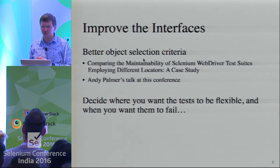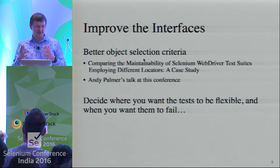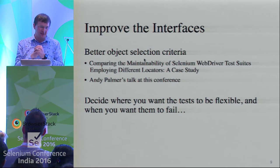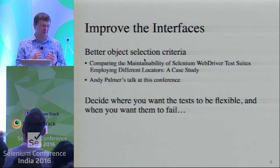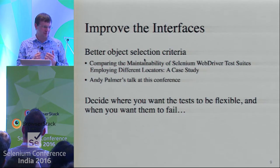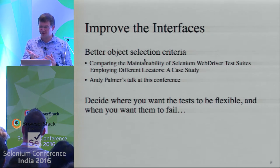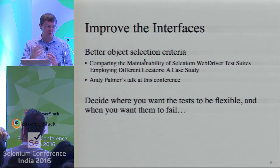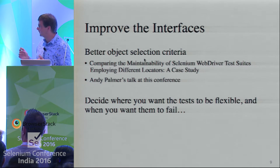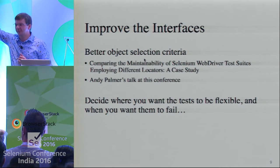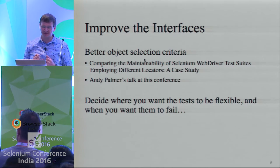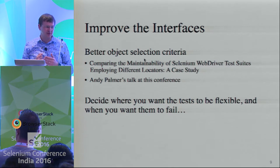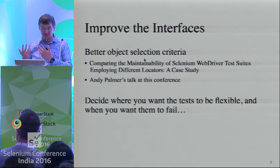In terms of making tests more reliable, improve the interfaces — the bridge between the system we test and our automation code. You'll probably hear many times at this conference about the challenges of using things like XPaths rather than adding IDs. There are specific talks here on ways to improve interfaces. There's an academic paper that looked at an industrial project in Italy; they compared the maintainability of the code base and found IDs were better, and explained why.